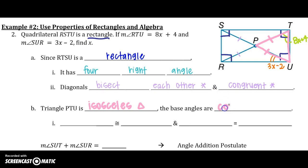And since they are congruent, I know that angle RTU, so RTU, so this angle right here, is congruent to angle SUT. So this angle right here.